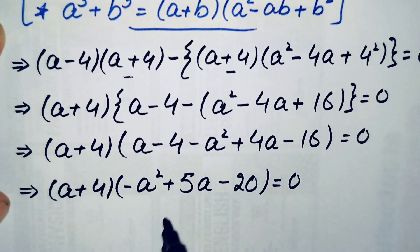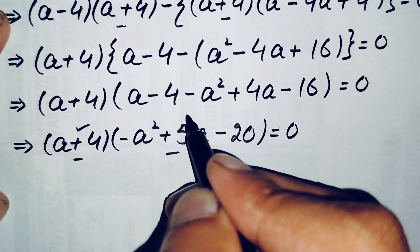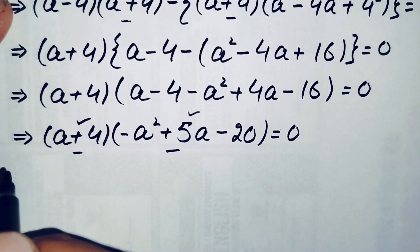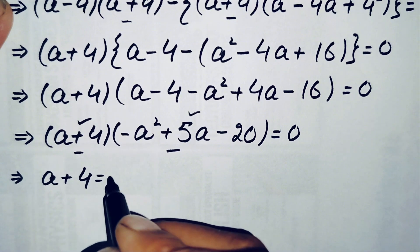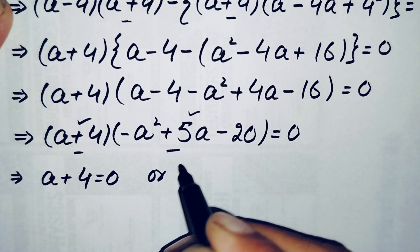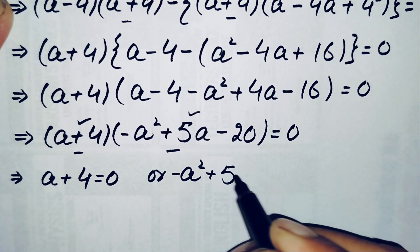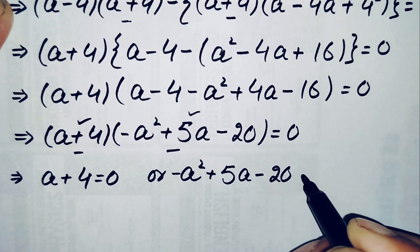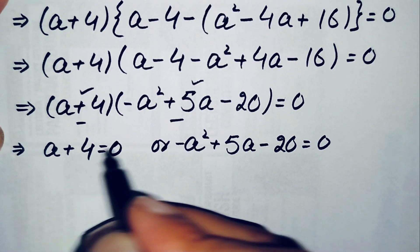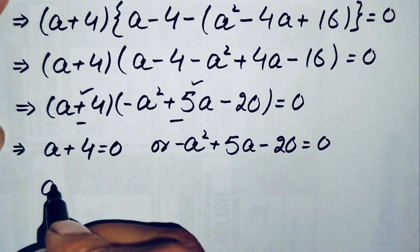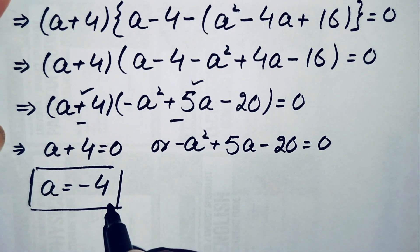Since the product of these two expressions is zero, either expression must equal zero. So we get two equations: a plus 4 equals 0, or negative a squared plus 5a minus 20 equals 0. Solving the first equation, a equals negative 4. This is our first solution.